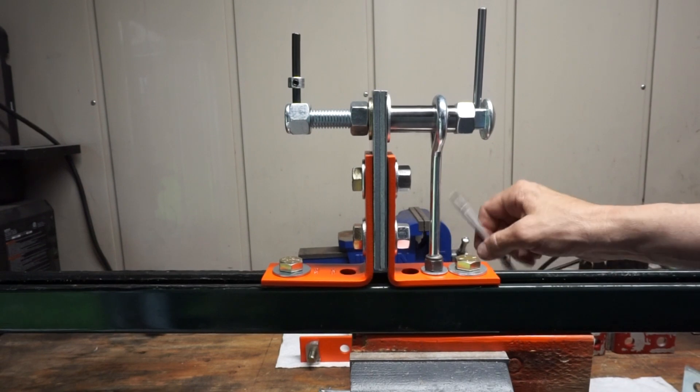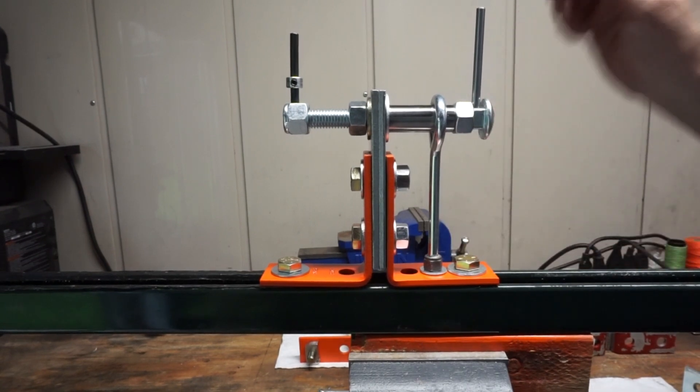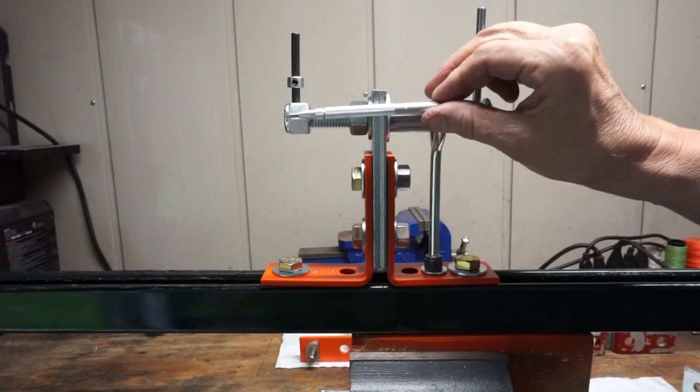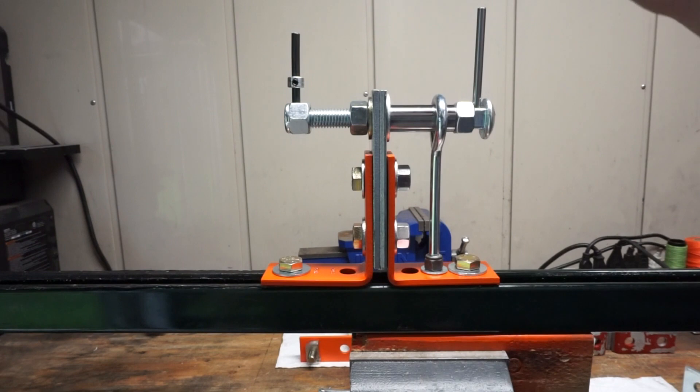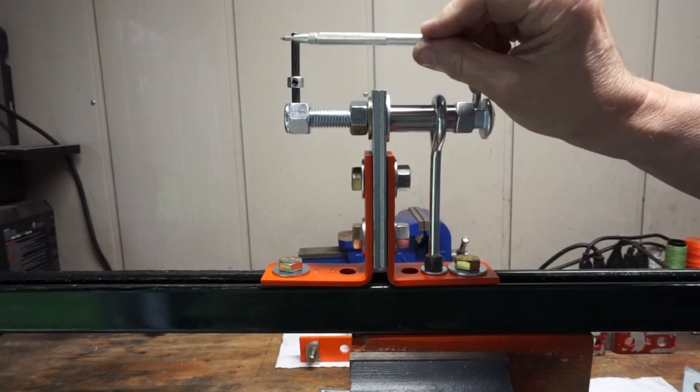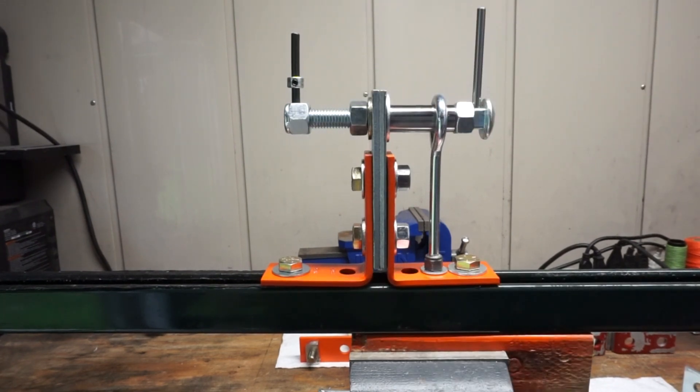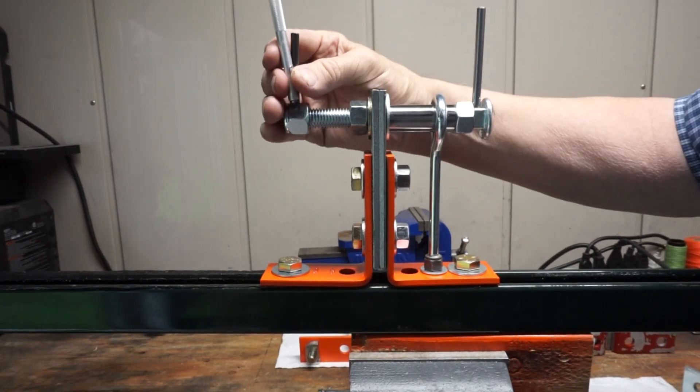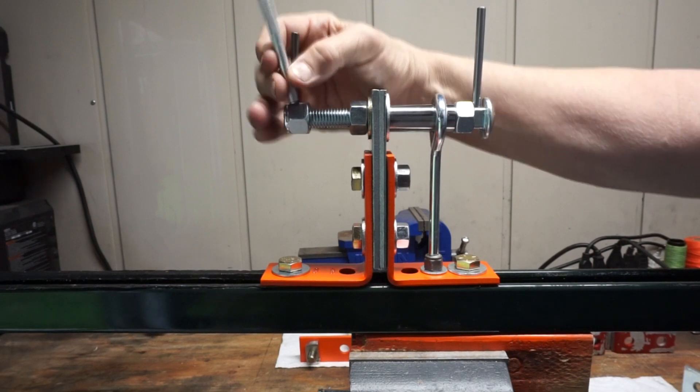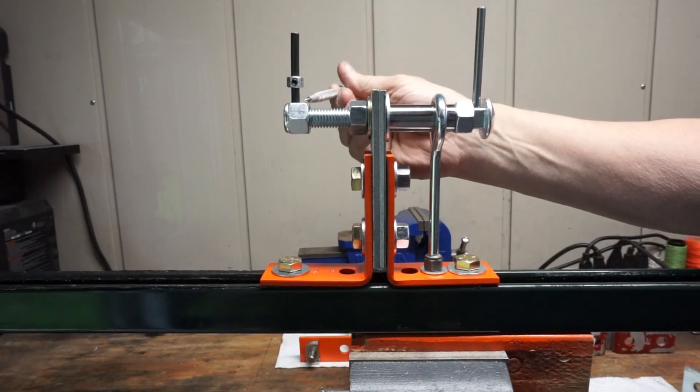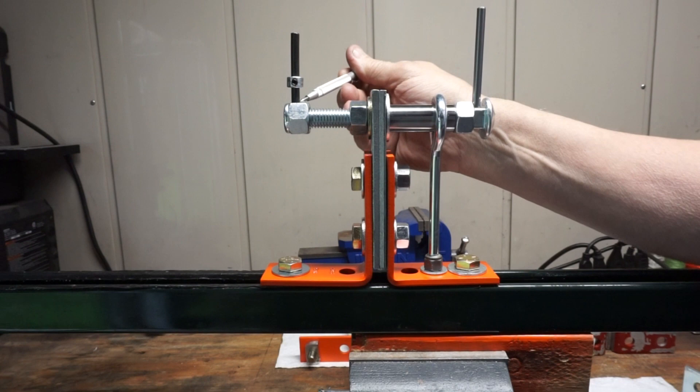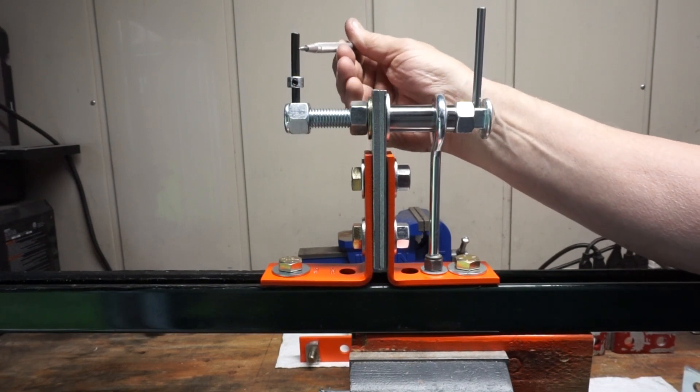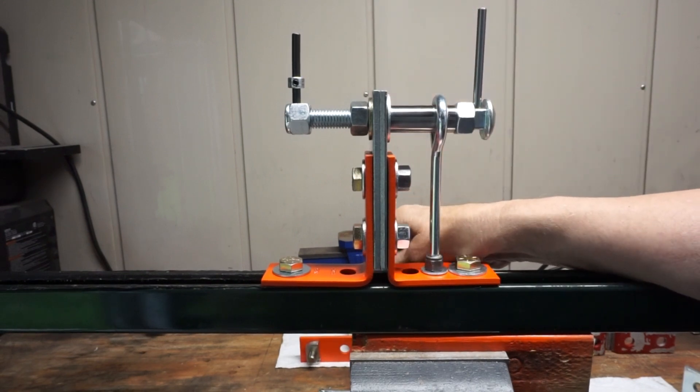When you start applying tension to the string, we're going to be pulling right here, and it's going to want to tip the carriage bolt downward, like so. When it does, the post is going to lean forward, of course not that much, but it's going to lean forward, and it's going to possibly allow the string to climb up the post and pop off.